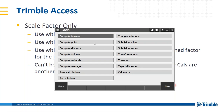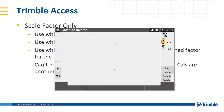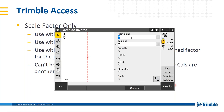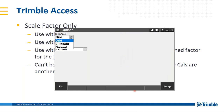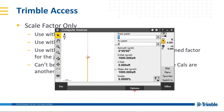Let's take a quick look at COGO. Doing an inverse from one to two, we get 999.8 feet. But if I go under options and change to ground, I get 1,000 feet. So we can see how that scale factor is affecting our measurements.